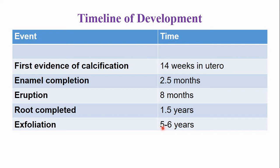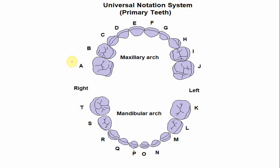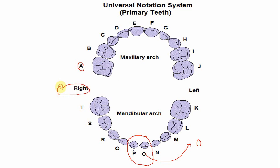In the universal numbering system, the alphabet for the primary dentition begins with A for the right maxillary first molar and continues in a clockwise direction. For the mandibular central incisors, the alphabet for the left mandibular central incisor is O, and the alphabet for the right mandibular central incisor is P.